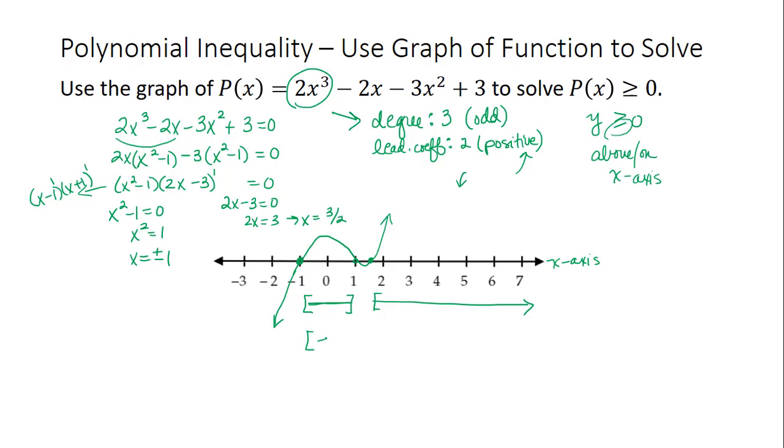My interval notation would be [-1, 1] union [1.5, ∞). On a number line, I shade the regions around those numbers. I'll shade between -1 and 1, and put brackets at those numbers, and then to the right of 1.5 with a bracket at 1.5.